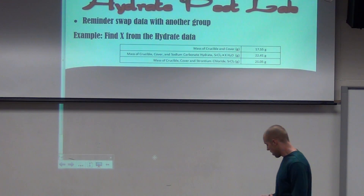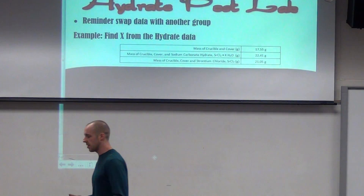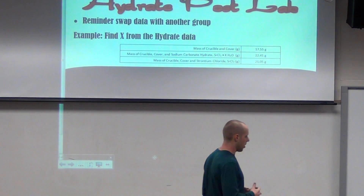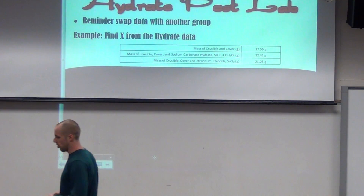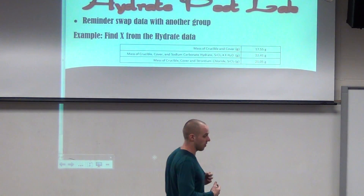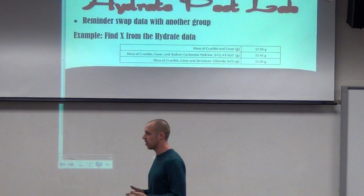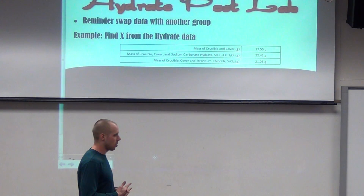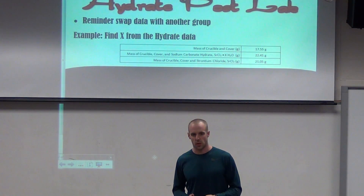If we take a look at number three in the post lab — number three is asking you to determine if certain things that could happen in the lab would affect the number of moles, or that ratio that you get for your water. For example, if you've got a six-to-one ratio or a three-to-one ratio — it's asking if those things would affect those ratios and how, whether it would be higher or lower, or no change. We should be thinking about what's happening to our data in order to answer those questions correctly.